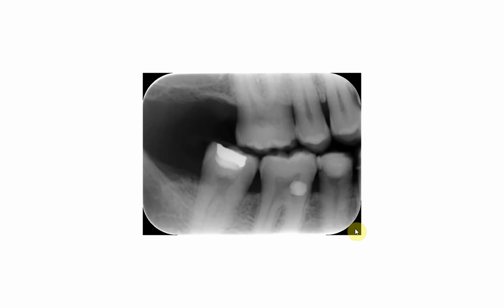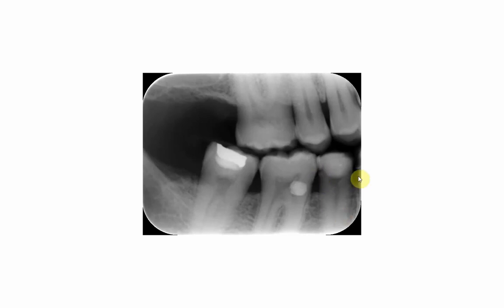This area of the root is exposed with no bone coverage due to chronic periodontitis or horizontal bone recession, which increases the incidence of cemental caries. To treat this, a class 5 cavity is prepared and filled with composite, or sometimes with amalgam depending on the situation and depth.